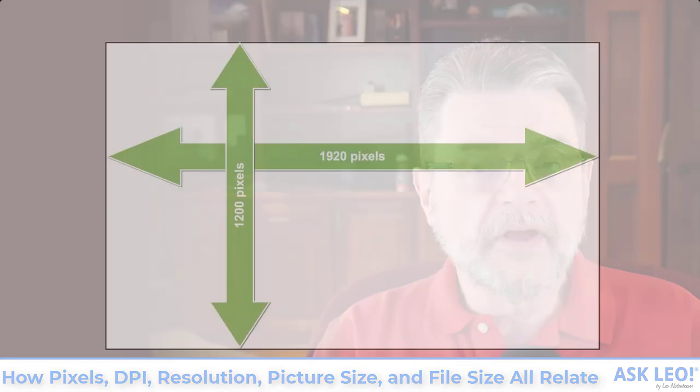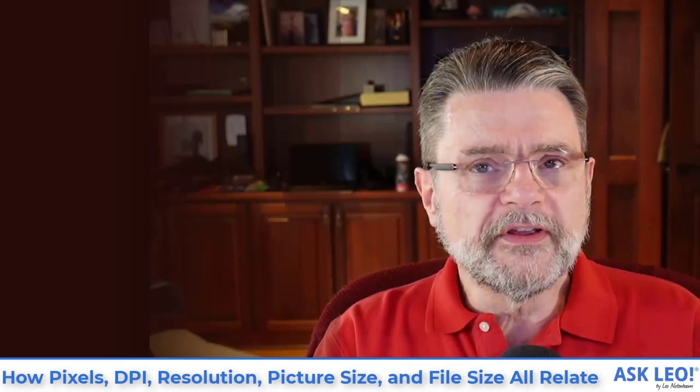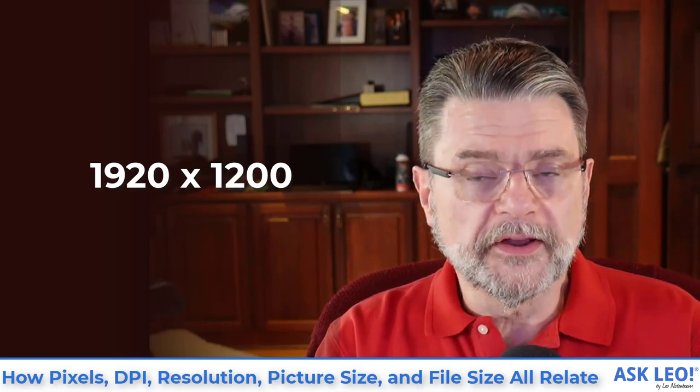We start talking about resolution. Resolution means, for a given image, the number of dots horizontally versus the number of dots vertically. You'll often see this measured as, for example, 1920 pixels by 1200 pixels. It's very common to refer to a picture or even a video as having a given resolution. The video I'm recording right now is in fact 1920 by 1080, which is a very common high-definition television resolution.